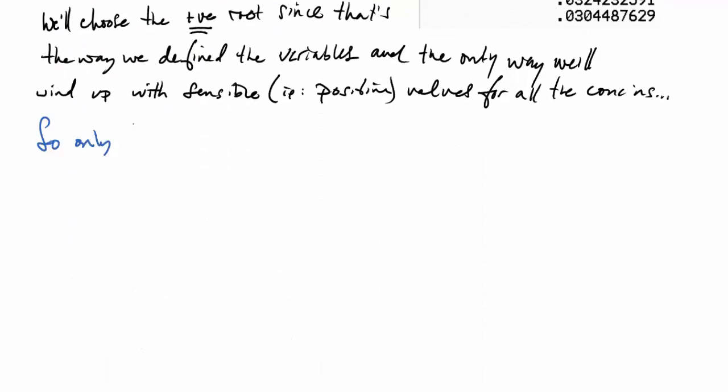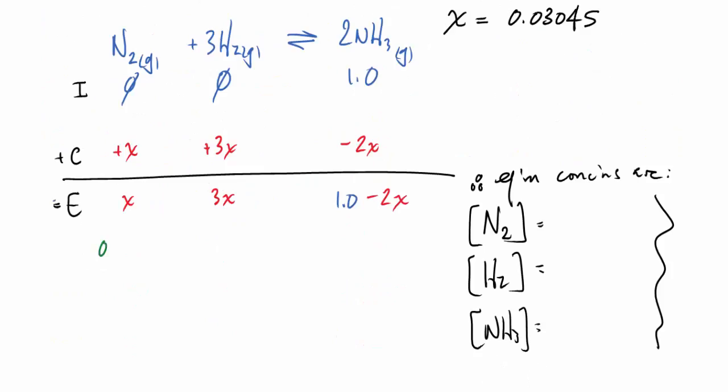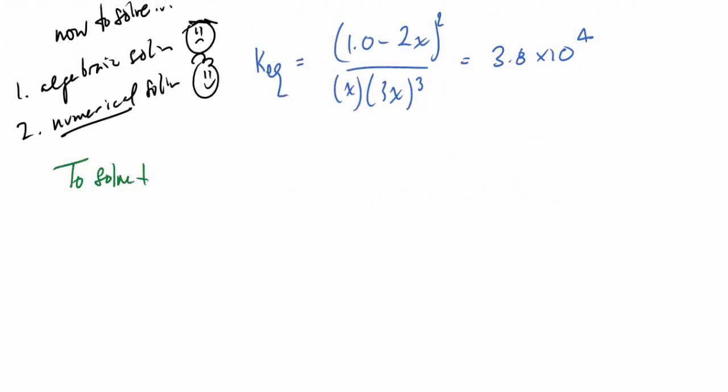So only thing to do now is get the values that we just got for our equilibrium change variable x and put that back into our ICE table. So here's the ICE table, and there's our x value. And we'll just substitute those values into that bottom line, the equilibrium concentration line, and compute these numbers here, 0.030, 0.090, and 0.94 molar were the concentrations.